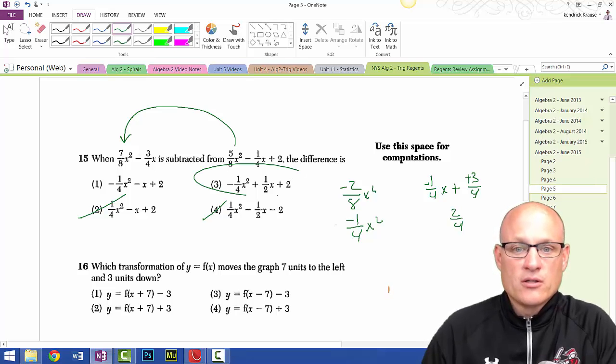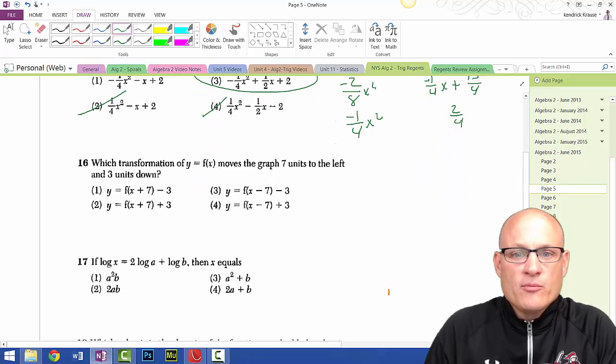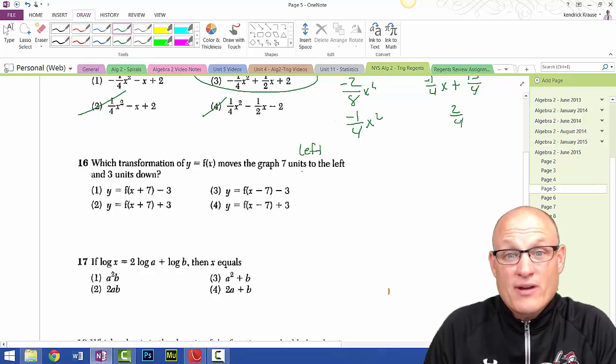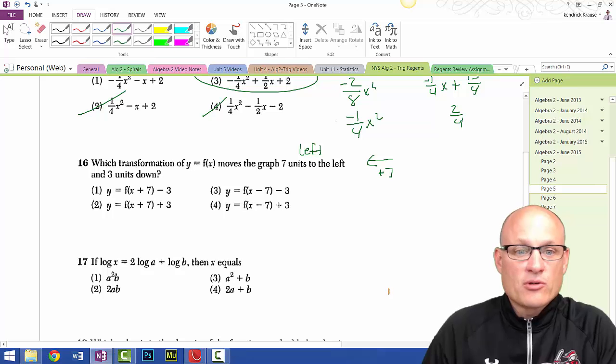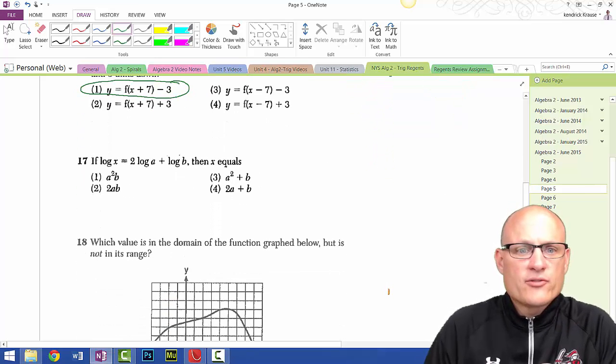Question 16: Which transformation moves the graph 7 units to the left and 3 units down? Remember the movement left and right is inside the parentheses backwards. So if we're going to go left 7, we have to add 7. And then we're going down 3 units, which is subtracting 3.